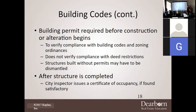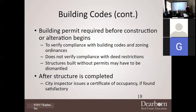People who get their real estate license and then start building without proper knowledge often get halfway through a structure only to find it doesn't meet building code or permit requirements, and they have to tear it down — a very costly mistake. After a structure is completed, the city inspector issues a Certificate of Occupancy if they find it satisfactory, and they look for every little thing.